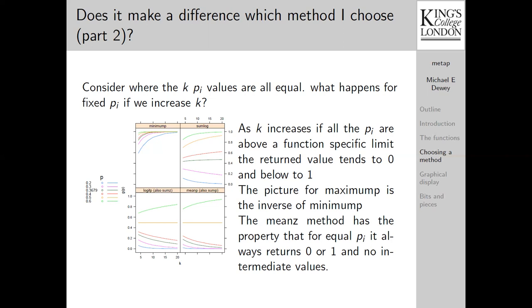It also can have some other rather strange properties. This is because it relies on the standard deviation of the p_i to get the significance value. And if they're all very close together, then you're dividing by a very small number and vice versa.